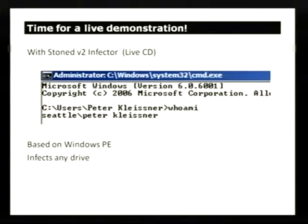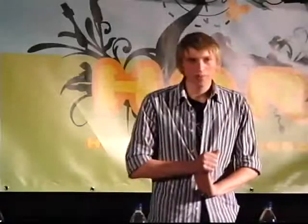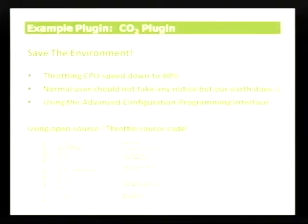I've also included boot applications and plugins. One example plugin is the CO2 plugin, which throttles down the CPU to 80% using ACPI and modifying one of its tables, so it reduces the CO2 output. It's also quite interesting because it uses open source code that was originally written for DOS to slow it down for old DOS games, and I can now reuse it.